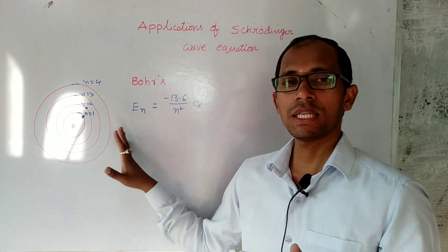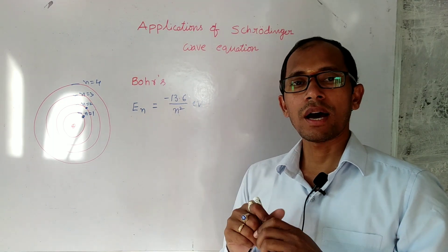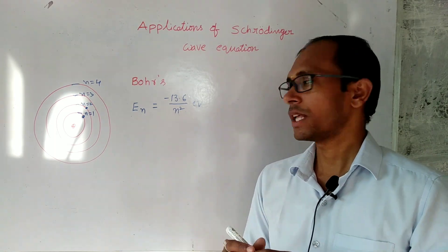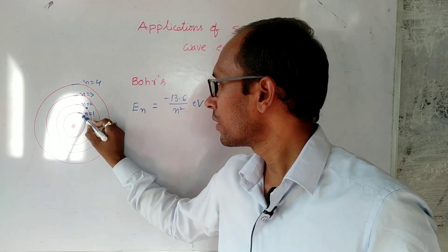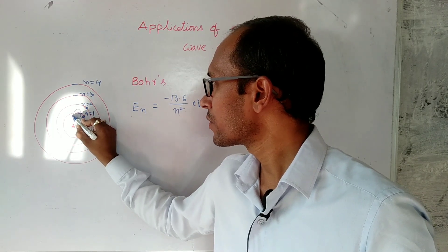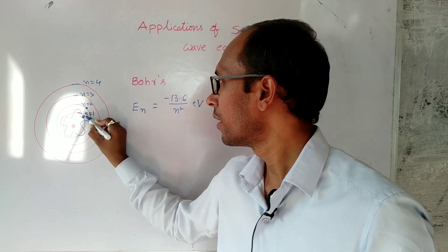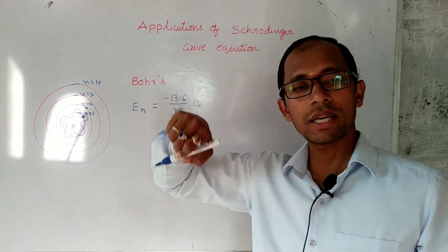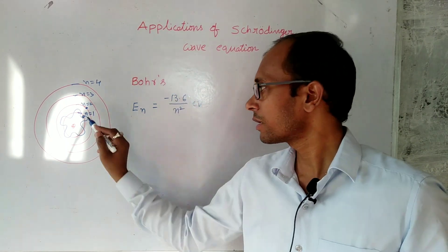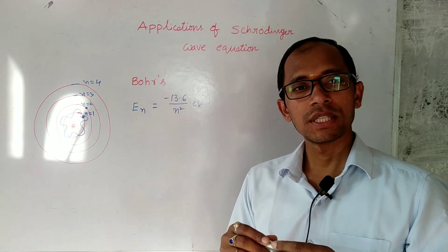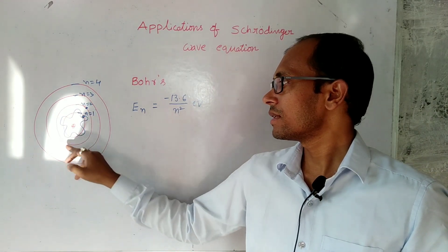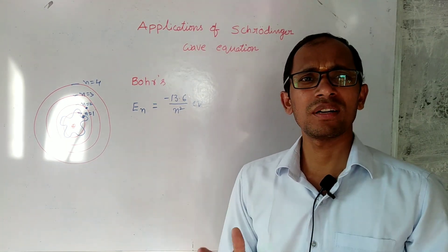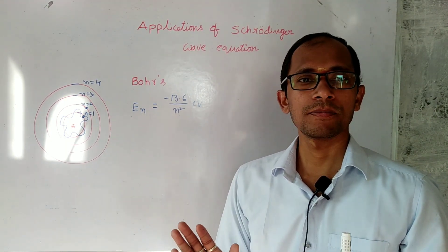De Broglie was inspired by Bohr's theory and proposed that matter waves exist — meaning the electron is moving in its orbit in a wave shape. The Bohr particle is always associated with a matter wave, and that matter wave looks like this in the orbit. So if you know the energy values, then we can know the energy of the wave — that particle wave.